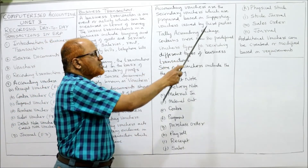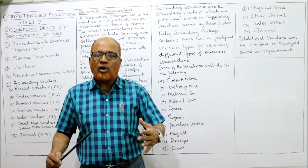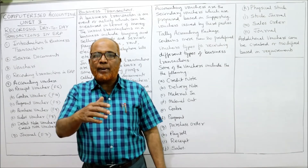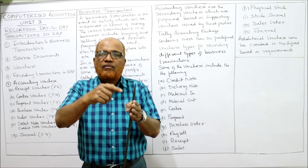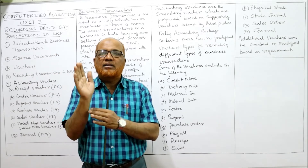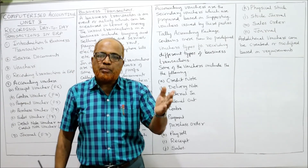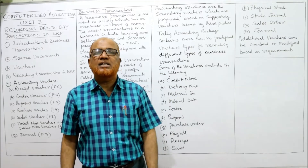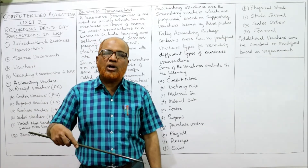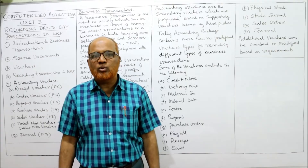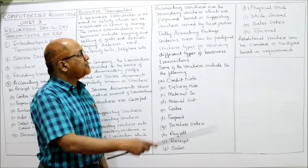Accounting vouchers are prepared on the basis of supporting vouchers issued by a third party. For example, if a business decides to purchase a machine, first a purchase order should be made by the business. On the basis of this purchase order, we will purchase the machinery. When we purchase the machinery, we get the invoice. So the invoice is the supporting voucher, and the purchase order we made is the accounting voucher. On the basis of both the supporting voucher and the accounting voucher, we record the transactions.